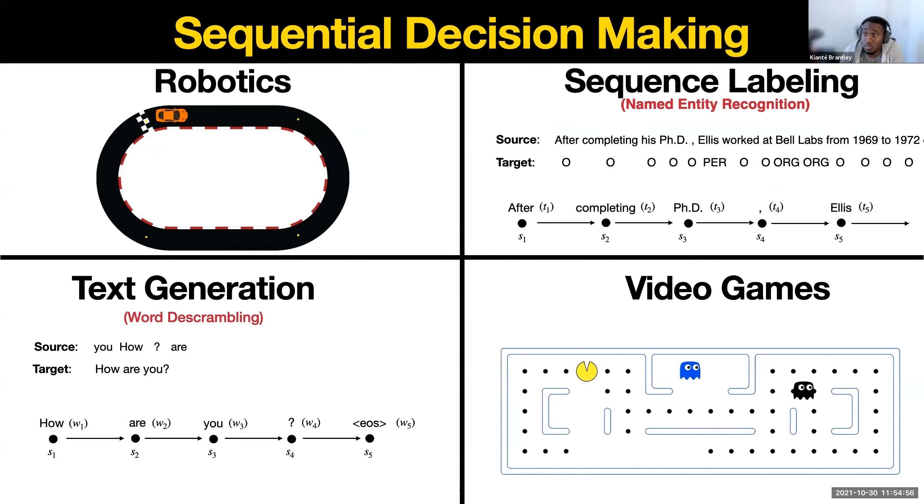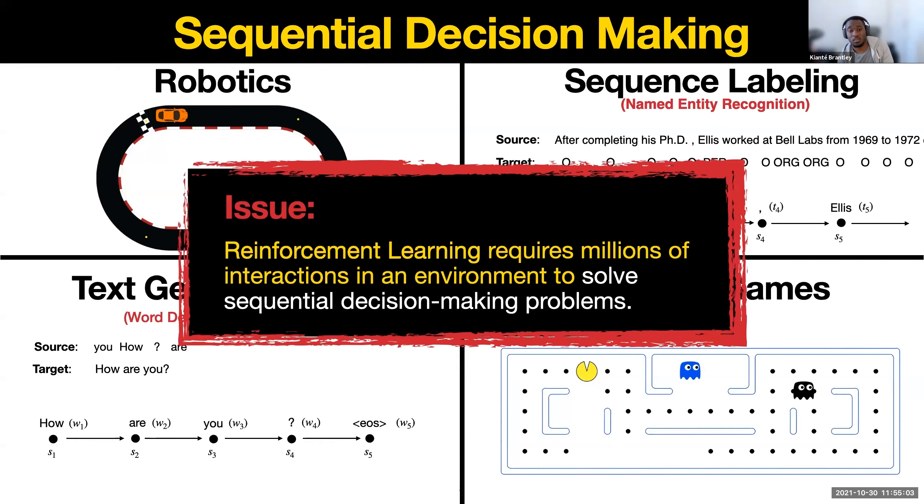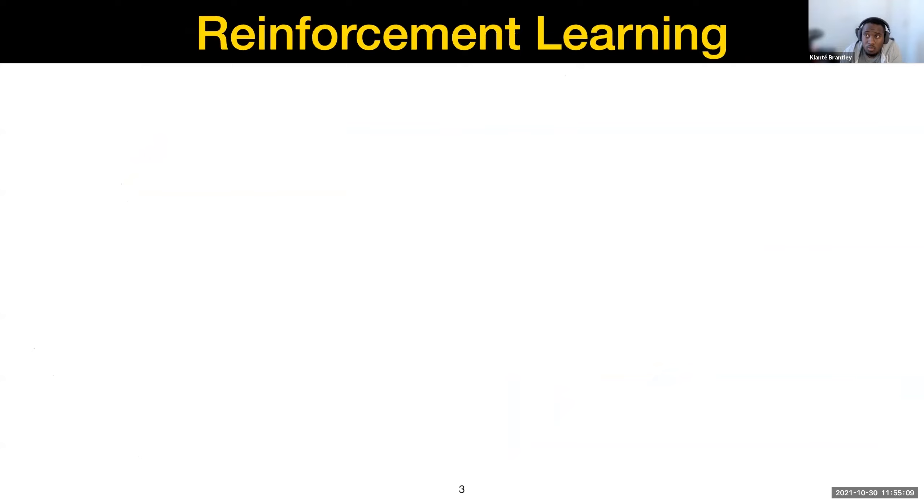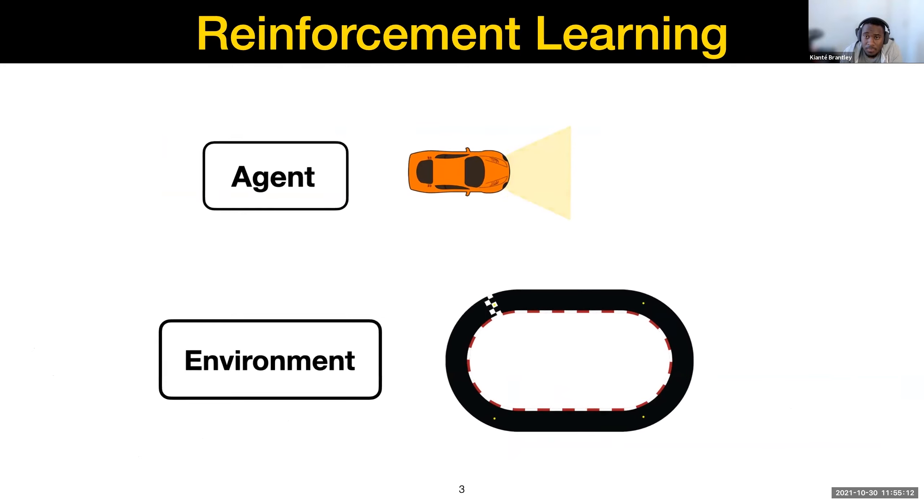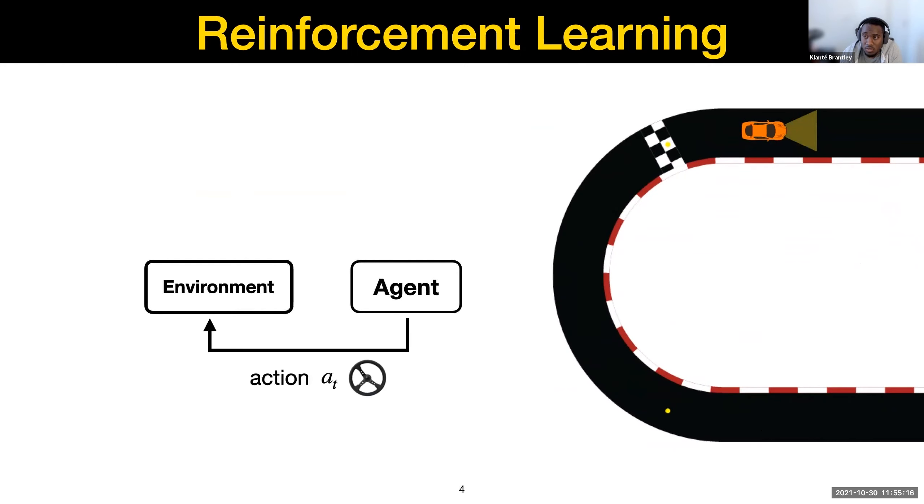And all these sequential decision-making problems, the de facto standard for solving these is called reinforcement learning. But the issue in reinforcement learning is that it requires millions of interactions in the environment to solve these sequential decision-making problems. So in reinforcement learning, typically we're given an agent in an environment. And the agent interacts with the environment by taking actions, which you can think as turning the steering wheel in the car. And the environment returns a state, which you can think about what the agent sees. And the environment also returns a reward, which is plus one for crossing the finish line and zero otherwise.